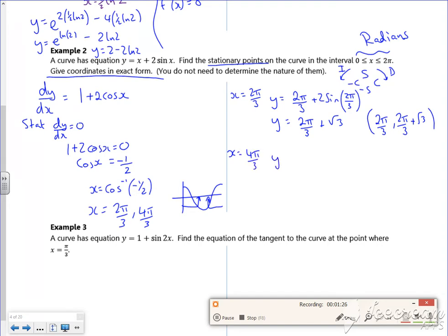Then for x = 4π/3, y would be 4π/3 plus 2sin(4π/3), so y would be 4π/3 minus √3. So I've got (4π/3, 4π/3 - √3). And so these two are stationary points.